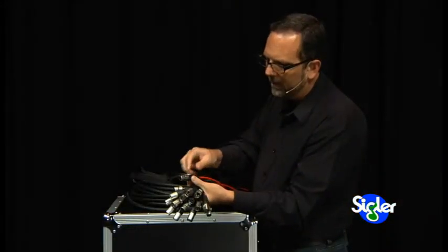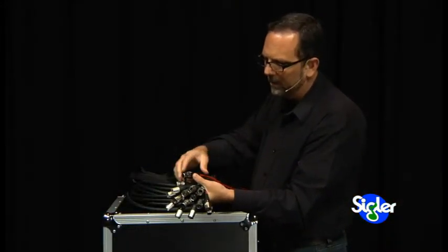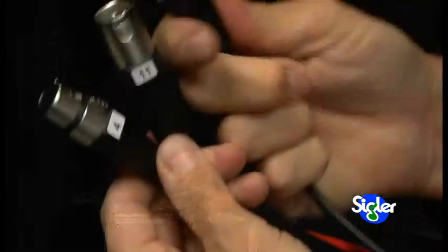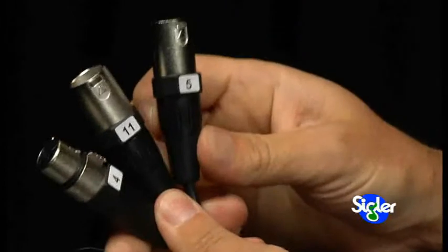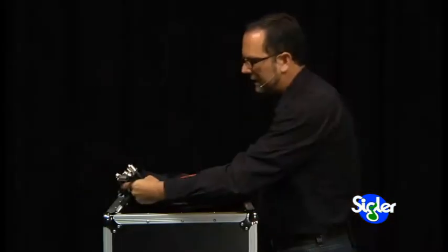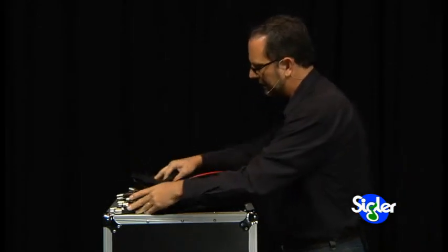You plug the inputs into the mixer or the outputs returns from the mixer, and the channel numbering will appear right on top. So it's going to be a very professional clean installation to have this cable connected to your mixing console.